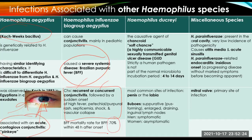Haemophilus ducreyi is a strictly human pathogen and is the causative agent of chancroid, the soft chancre — a highly communicable sexually transmitted genital ulcer disease (GUD). This species is not part of the normal microbiota and the incubation period ranges from 4 to 14 days. The most common sites of infection include the penis and the labia in females. Suppurative, pus-forming enlarged or draining inguinal lymph nodes known as buboes are common in most infected patients.